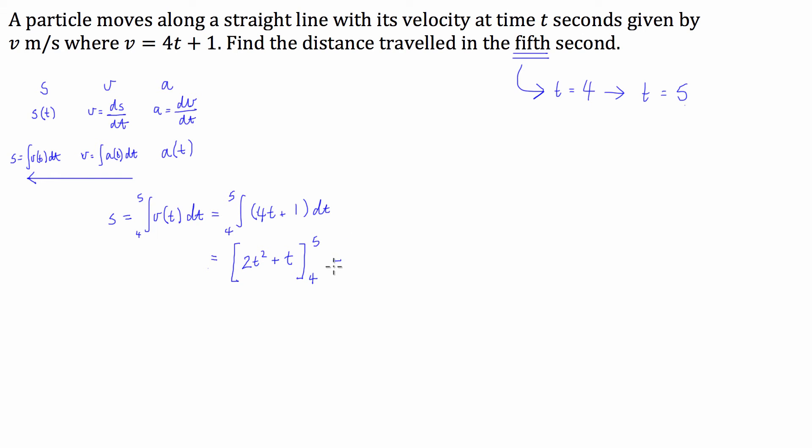So this is equal to, we substitute 5 in for t first, so this is going to be 5 squared is 25 times 2 is 50, plus 5, and then we subtract our lower bound. So 4 squared is 16 times 2 is 32, so we have 32 plus 4. 55 minus 36 is equal to 19 metres. And that is how far the particle will travel in the fifth second.